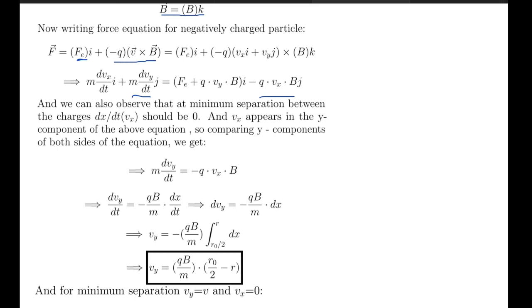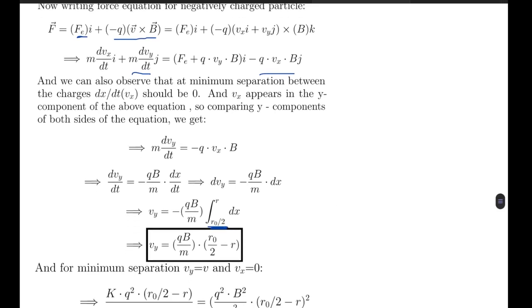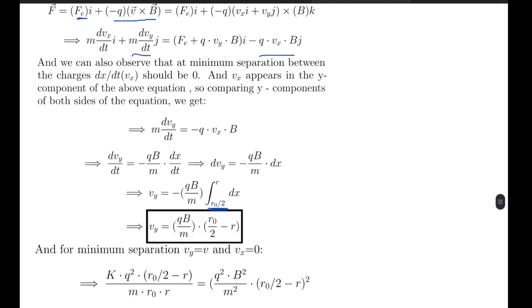From here, vy equals to minus q B by m integral from r naught by 2 to r dx. And r naught by 2 is the initial moment when the separation of particles was r naught, and r is some random instant. So from here what we get is vy as a function of r is q B by m times (r naught by 2 minus r).